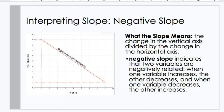Interpreting the slope. Negative slope. What the slope means? The change in the vertical axis divided by the change in the horizontal axis. A negative slope, sometimes called inverse, indicates that two variables are negatively related. When one variable increases, the other decreases. And vice versa. When one variable decreases, the other increases.